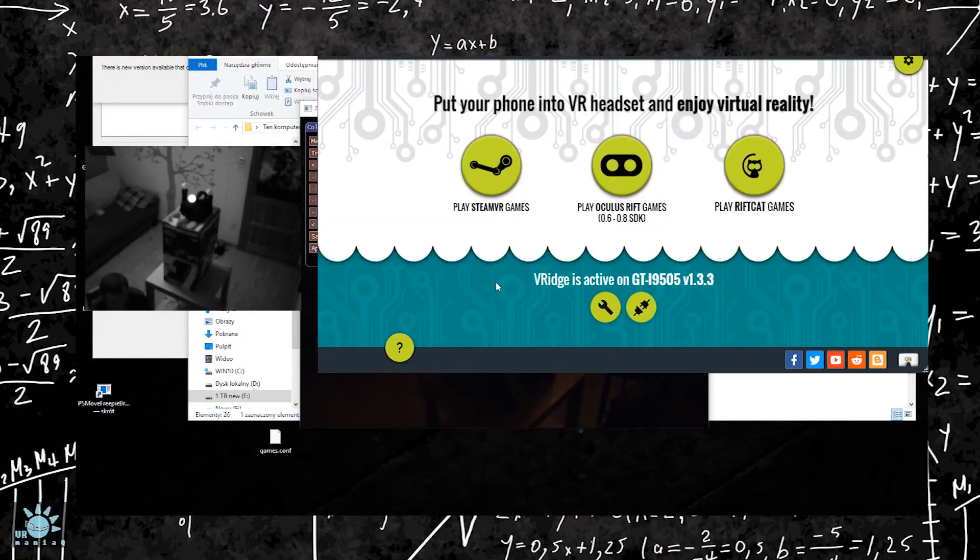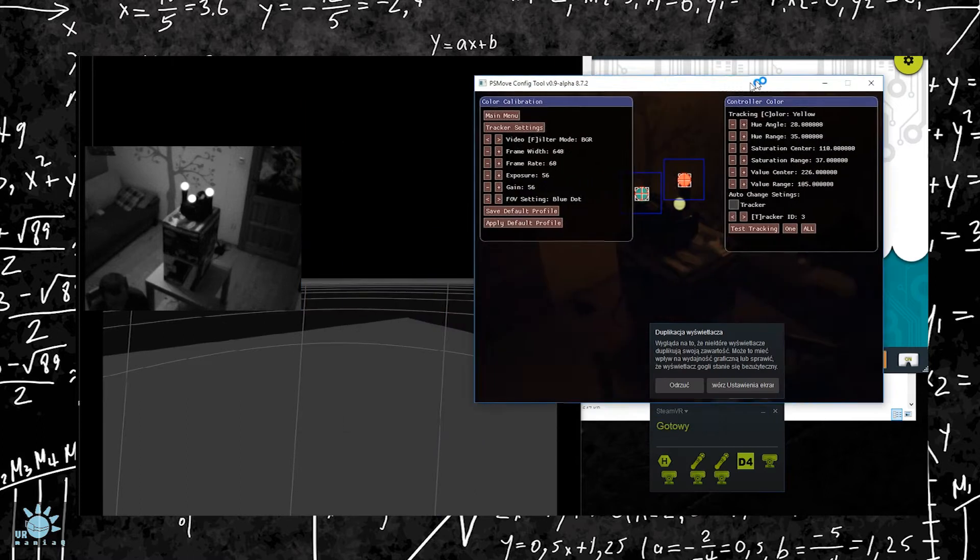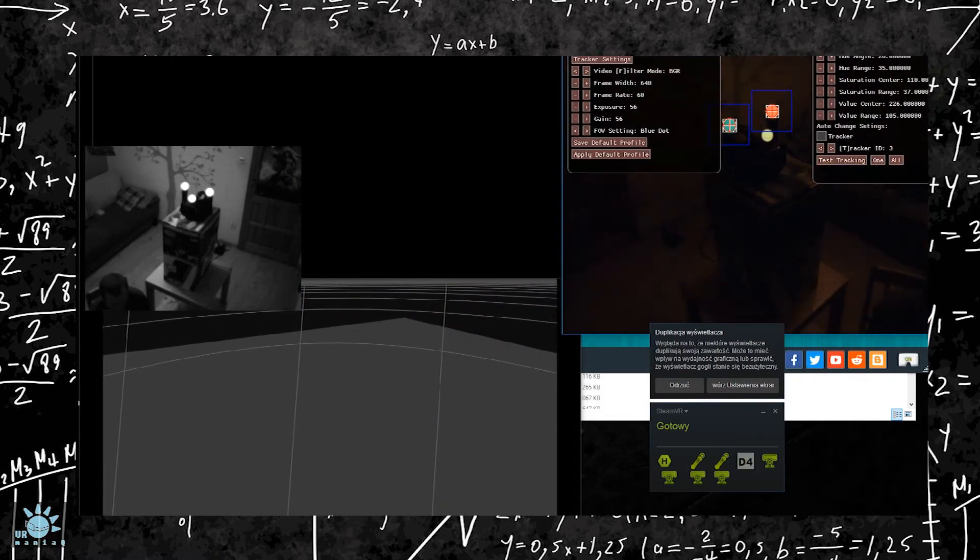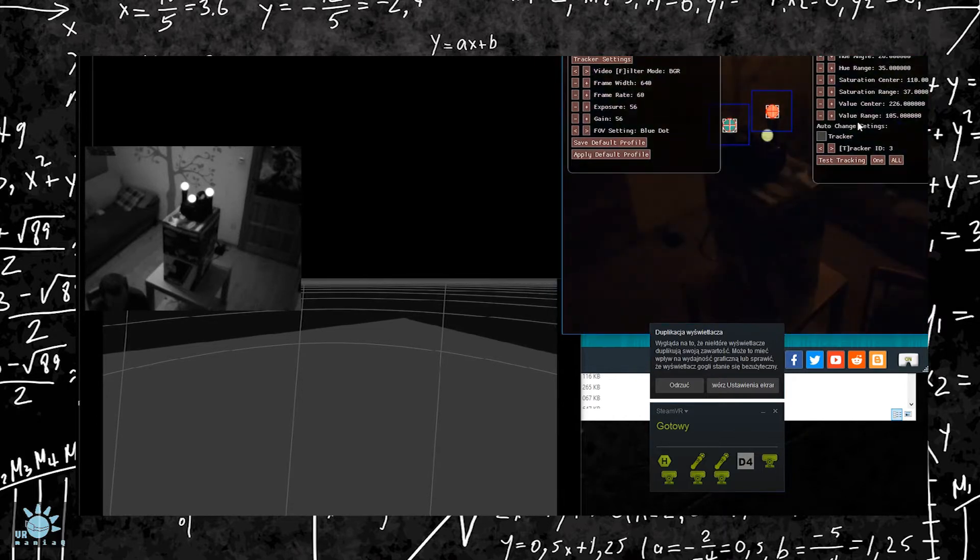Before we do that it would be right to set the colors. I run SteamVR because there is no turn on bulbs option in the HMD color setup.